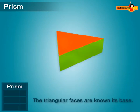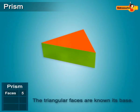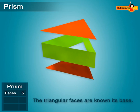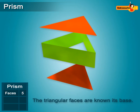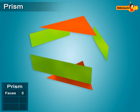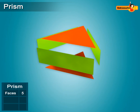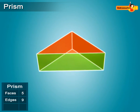A prism has 5 faces: a top and a bottom which are made up of triangles. Other 3 faces are made up of rectangles. It has 9 edges and 6 vertices.